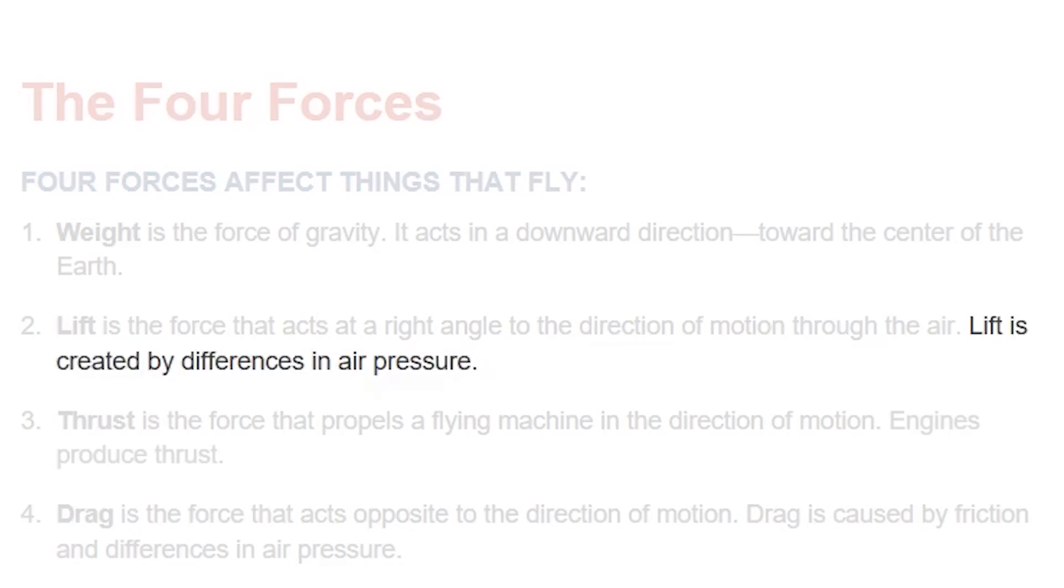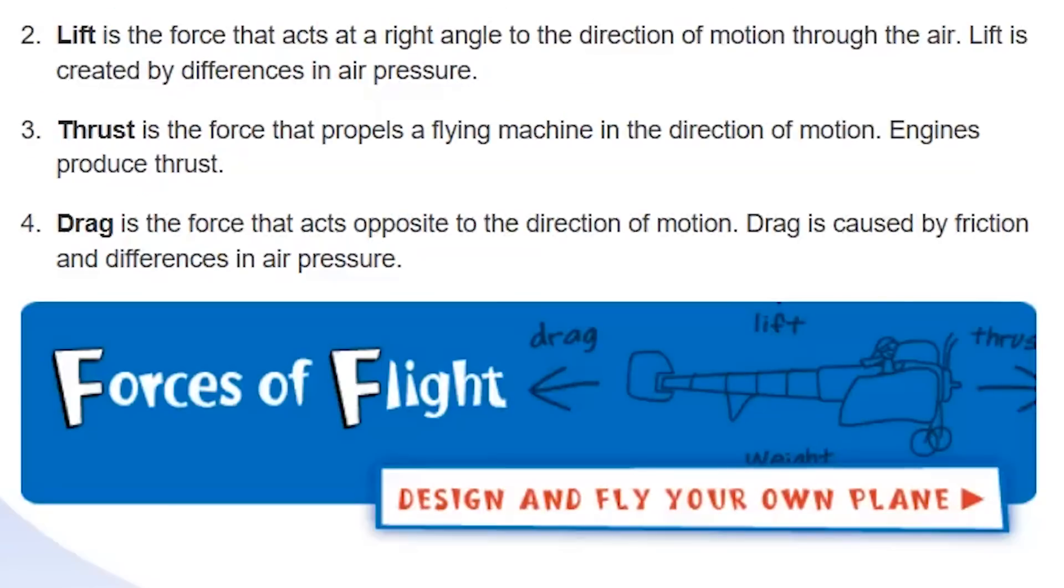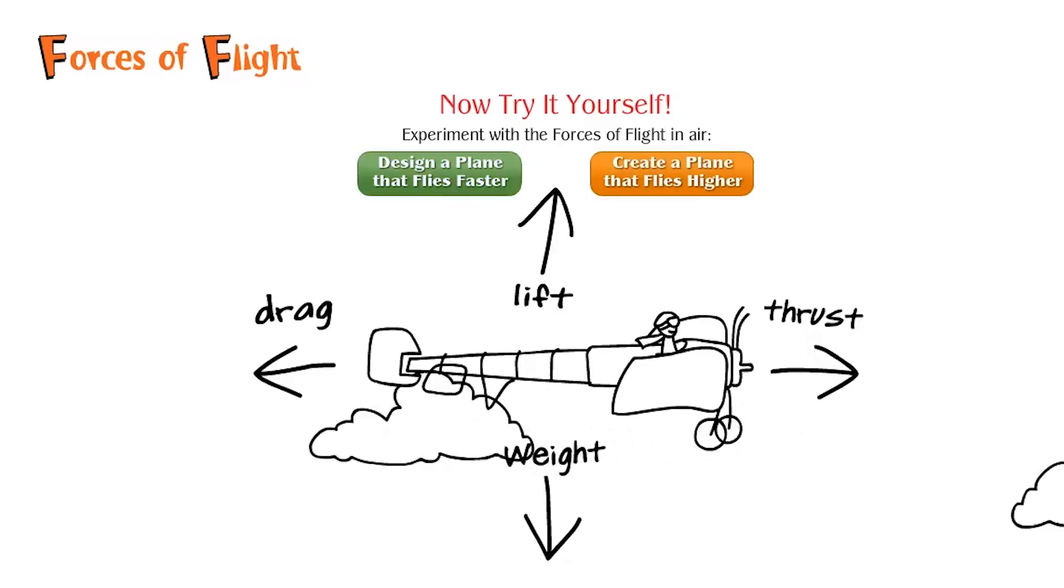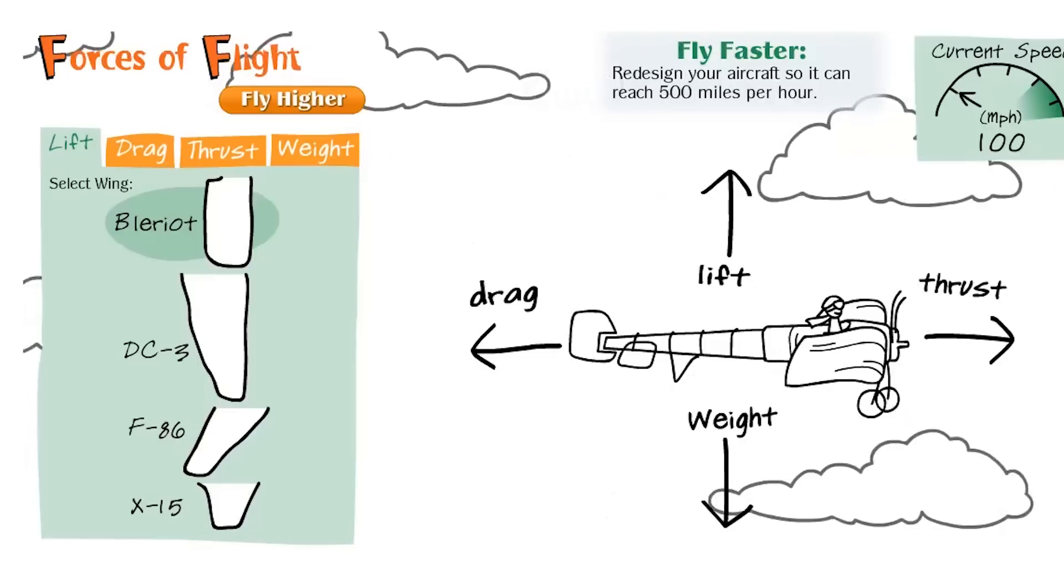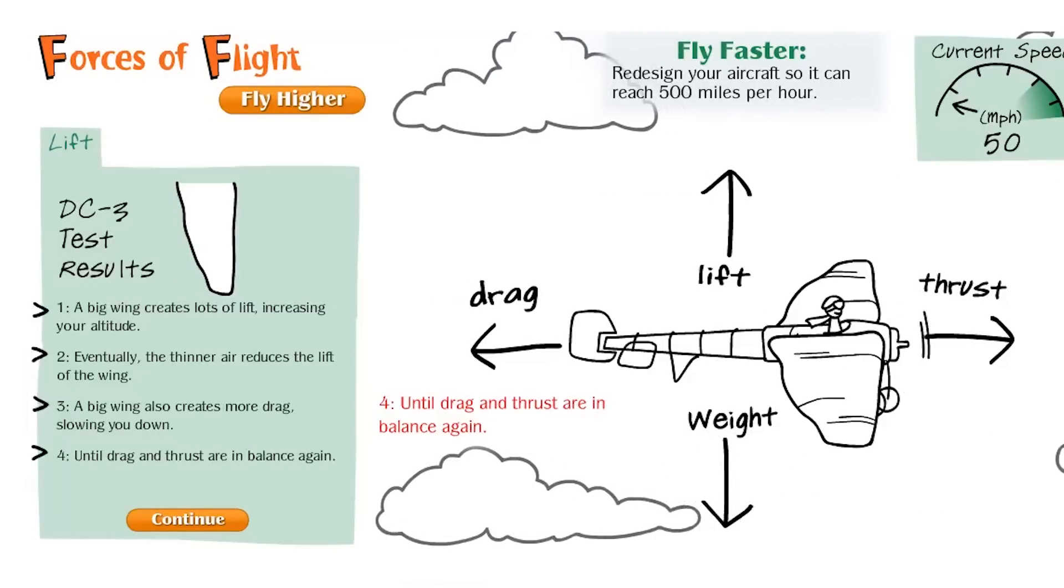which you can learn about on this page. Now that you know engines produce thrust and lift is created by differences in air pressure, it's time to make your own aircraft. You can manipulate the four forces and watch them in action. For lift, I can choose this wing, DC-3,